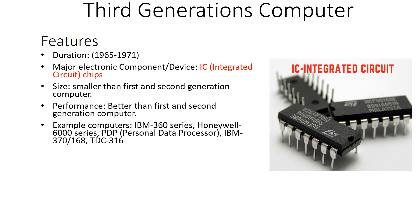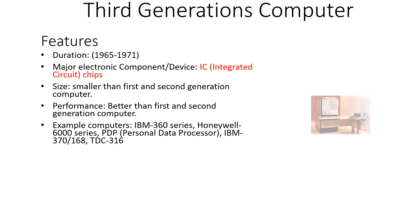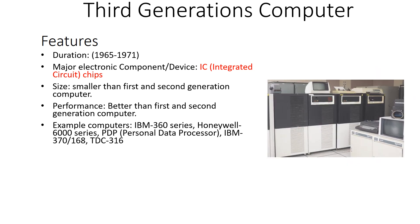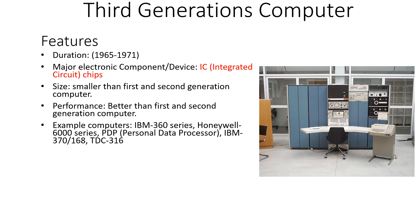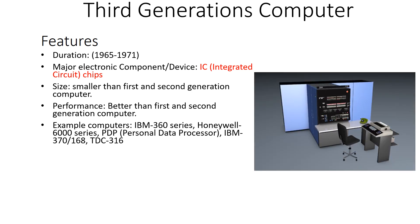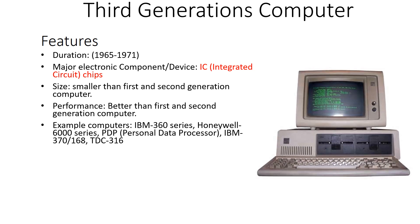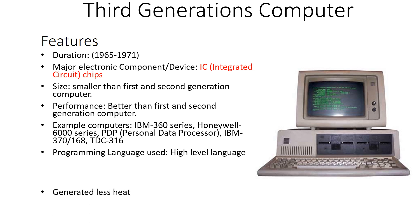Examples of third generation computers include IBM 360, Honeywell 6000 series, PDP (Personal Data Processor), IBM 370/168, and TDC 316. Third generation computers used high-level programming languages and generated less heat compared to first and second generation computers.